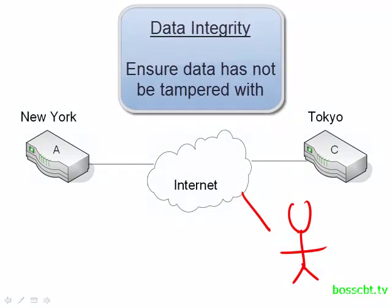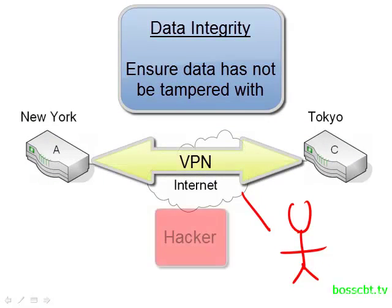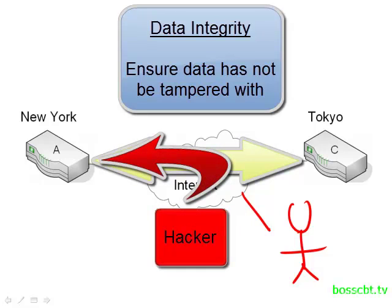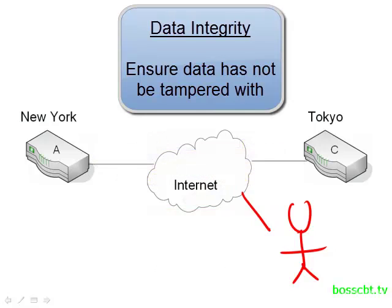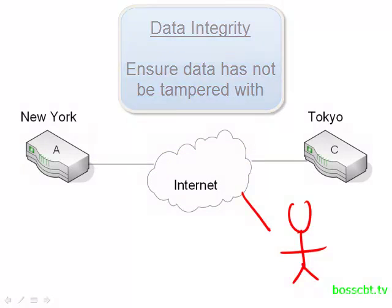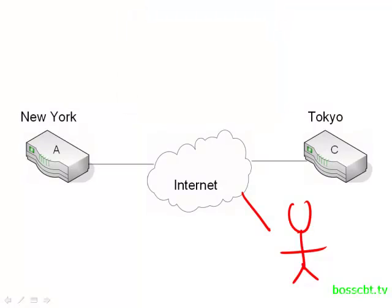The last thing we get is data integrity. A VPN will ensure that the data hasn't been tampered with while it's in transit. So even if somebody does steal some of our data while it's traversing the Internet, they can't mess with that data and put it back into the stream so that when New York gets it, we're receiving incorrect data. If you think about it, it's a pretty complete approach: confidentiality so nobody else can read our data, authentication to confirm who it comes from, and data integrity to detect if somebody has tampered with the data while in transit.